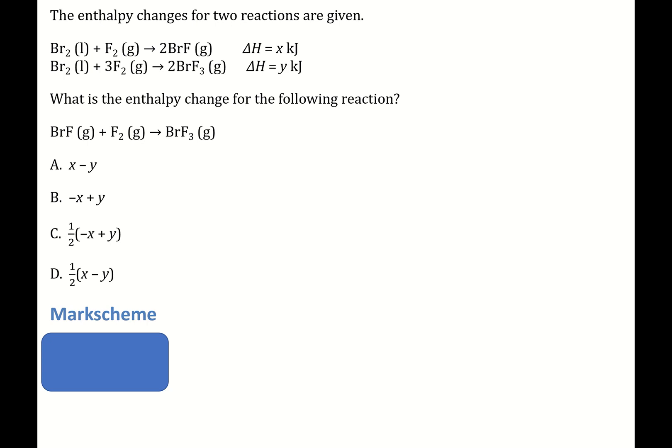To start off with, I'm just going to label these as 1, 2, and 3. So we've got these three reactions. We have two enthalpy changes, but this time they're represented with x and y kilojoules. And what we need to do is rearrange these equations to get equation 3, so the reaction number 3.